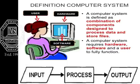A computer system is defined as a combination of components designed to process data and store files. It processes data and makes it into information, because data are the raw facts and figures, and information is the meaningful result. This is the basic flow: we give input, the computer or processor processes that data, and the processed data is converted into meaningful information.